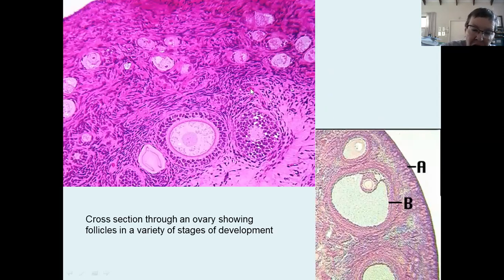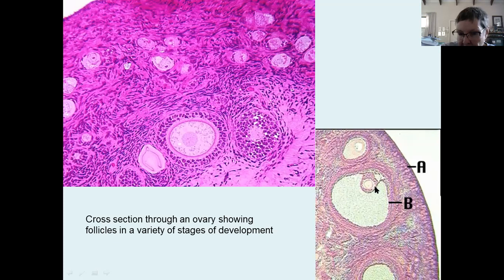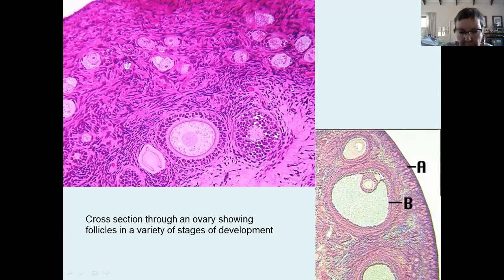Here's a cross-section micrograph through an ovary showing various stages of development. You can see little primary follicles, a follicle which is busy maturing, and on the right side is a Graafian follicle — almost a Graafian follicle — because it contains a lot of liquid. This is the little haploid cell that is going to be ovulated — remember, you're going to just call it an egg cell.